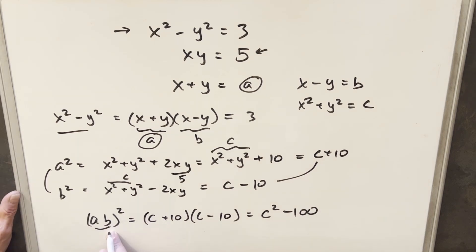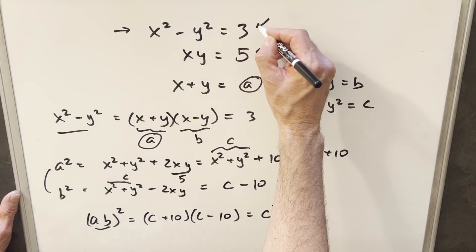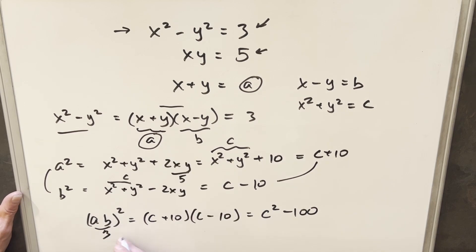But we know the value of ab because that's just our original expression, or that's this 3. So if ab is 3 and we square it, then this is going to be equal to 9. Well, then I can add 100 on both sides, and we're going to see that c squared equals 109, or c is going to be equal to plus or minus square root of 109.